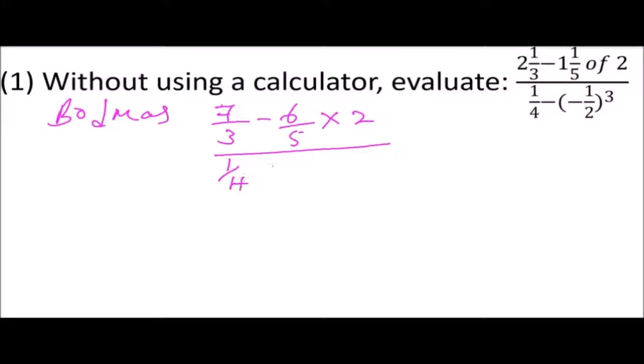Here we have bracket, and when you cube -½, 2³ is 8. Because we have a minus sign here, minus multiplied by minus multiplied by minus is minus. So you have, in bracket, -1/8.